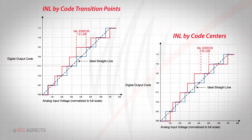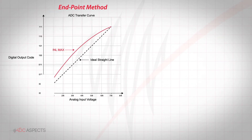Comparing the two figures, it can be seen the INL value will be somewhat smaller using the code center method. To add to the complexity, the ideal straight line can also be defined in different manners, either using the endpoint method or best fit method.